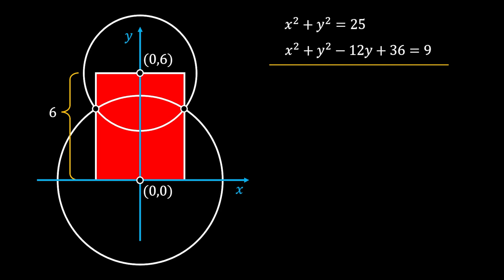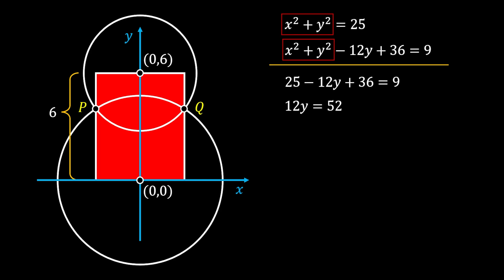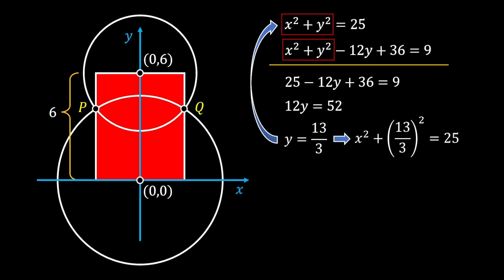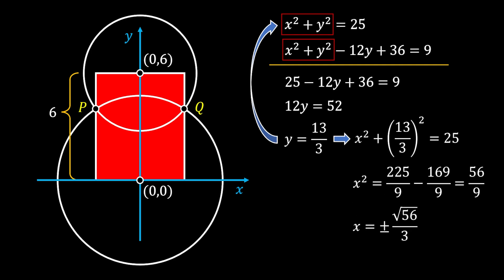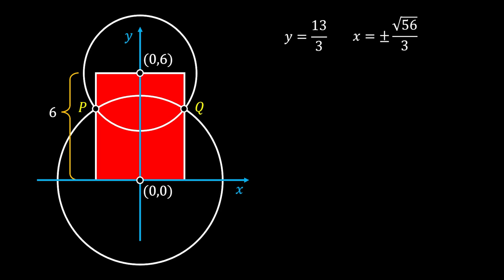It is easy to solve this system by noticing that x² + y² is repeated in both equations, so we substitute its value as 25. After simplifying, we get that the coordinate y must be equal to 13/3. We can then substitute this value into our first equation: x² + (13/3)² = 25. Putting everything over a common denominator, we get that x² = 56/9, which means x must be equal to ±√56/3.